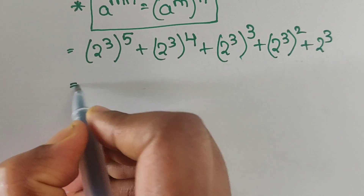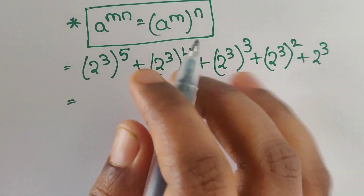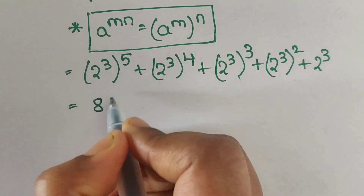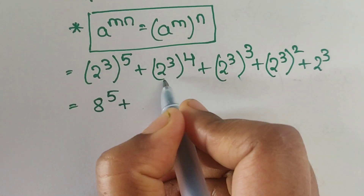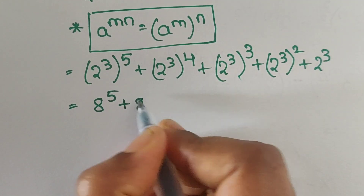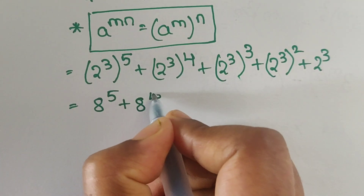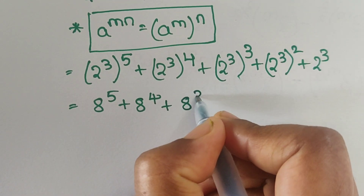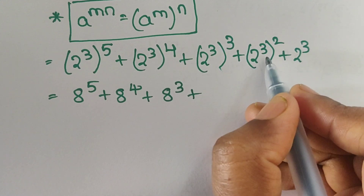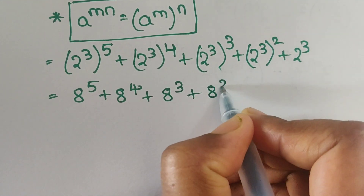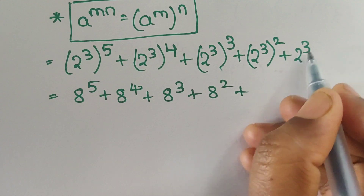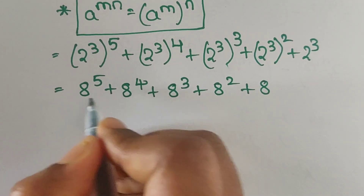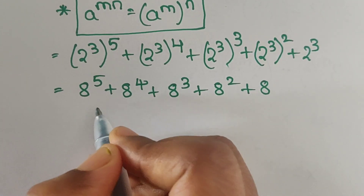Now, 2 power cube equals 8. So this becomes: 8 power 5 plus 8 power 4 plus 8 power 3 plus 8 power 2 plus 8.